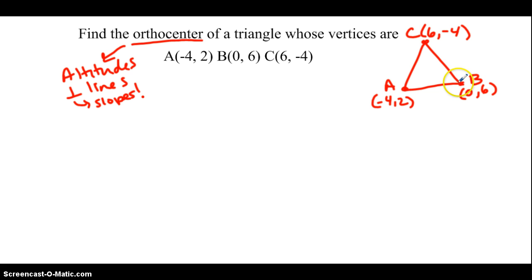I'm going to look at the altitude from B to AC first. If I'm looking at the altitude from B to AC, what do we know about this altitude? Let's put this segment in green. Let's call it BD. What would I know about BD? Well, I know that it's perpendicular to AC. So if I want to find BD's equation, I'm going to look at the slope of AC and do the opposite reciprocal. So the slope of AC is going to be negative 4 minus 2 over 6 plus 4. So that's negative 6 over 10, which is negative 3 fifths.